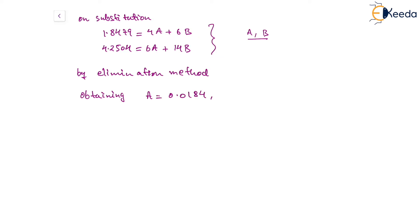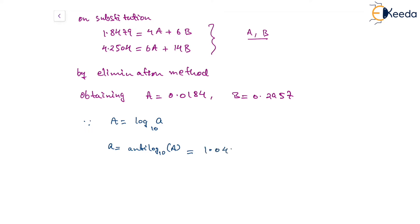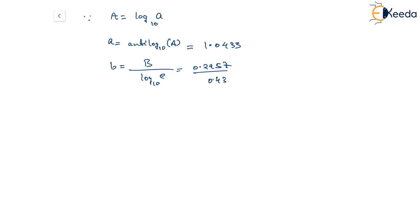Since we have A equal to log of a, we may say that small a will become anti-log of A. So that will be anti-log of 0.0184, which becomes 1.0433. Also, b will be given by capital B over log of e base 10, that is 0.2957 over 0.4343, which equals 0.6809.